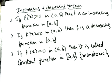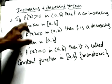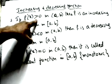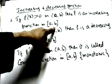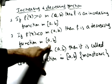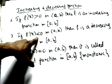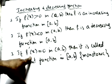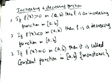For increasing and decreasing functions: if f′(x) > 0 on a closed interval [a, b], then f is an increasing function on that interval. If f′(x) < 0, then f is a decreasing function. If f′(x) = 0, then it is a constant function, also known as a monotonic function.